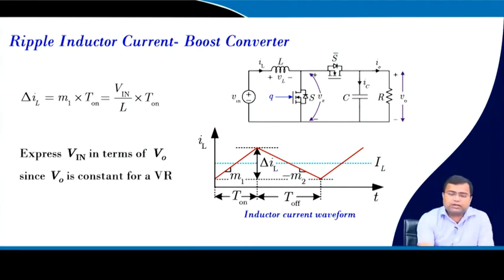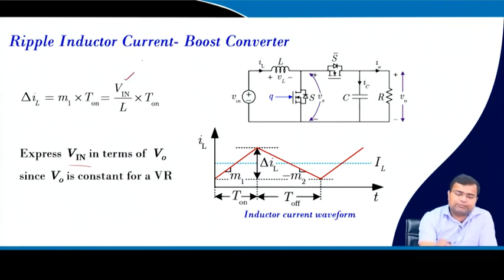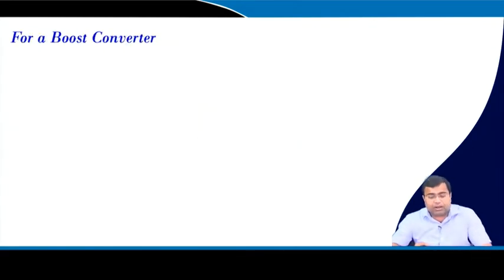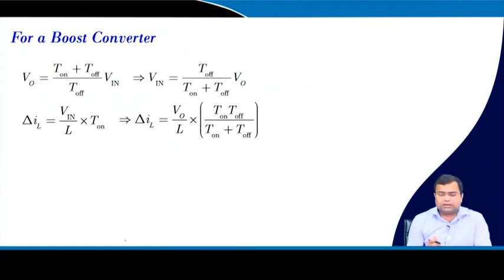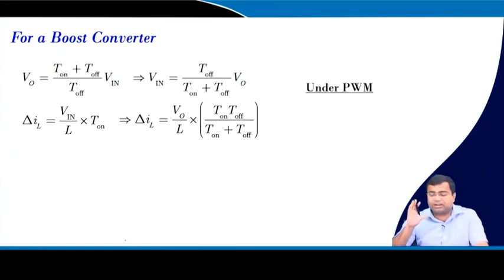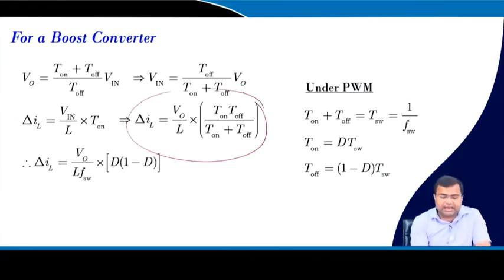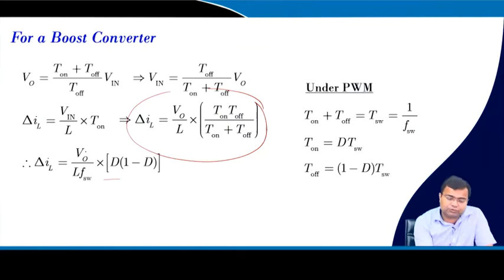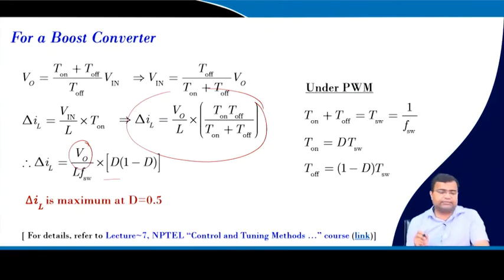For the boost converter, the inductor current ripple is again a function of on-time and input voltage. Under PWM, the inductor current ripple is proportional to D·(1−D), so for a voltage regulator with fixed output voltage, the ripple is maximum at 50% duty cycle — meaning when input voltage is half the output voltage — as discussed in lecture 7.